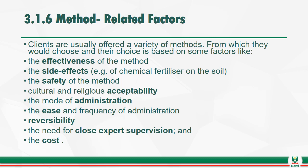The method-related factors are those methods through which the technology will go in the course of training and passing it to the target people or farmers. The factors of consideration here are the effectiveness of the method, the side effects of the method, the safety of the method, the cultural and religious acceptability, the mode of administration, the ease and frequency of administration, and the reversibility of the technology. The cost and the need for close expert supervision are also factors — technologies that require close expert supervision are less readily accepted by people compared to those that do not.